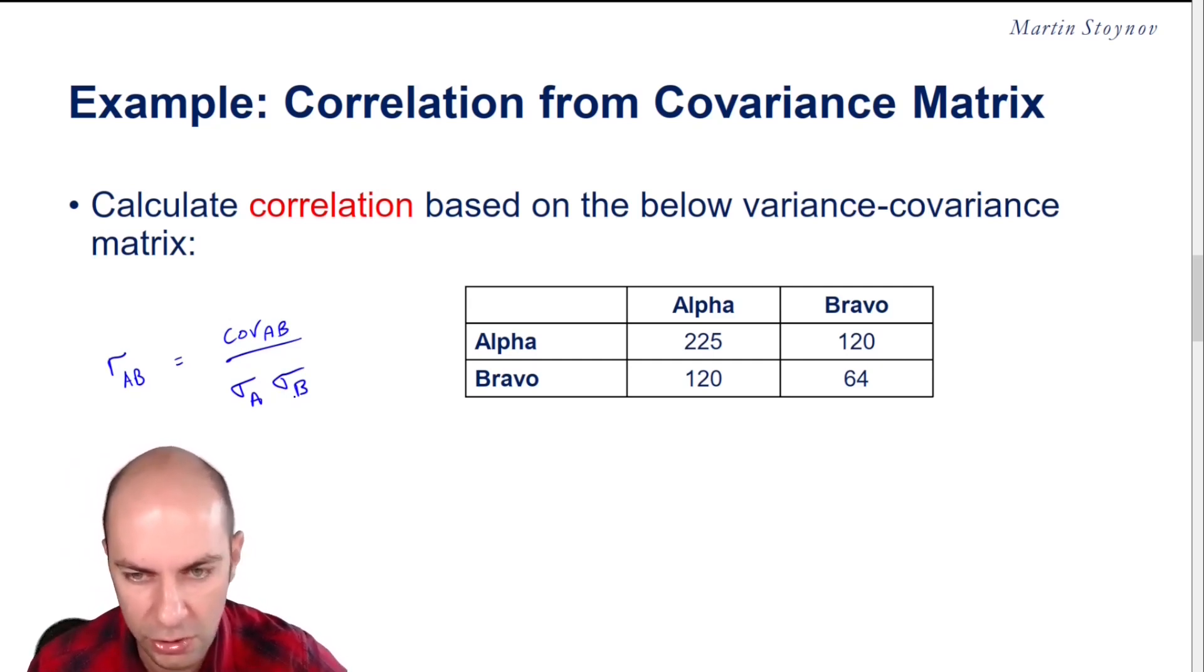The second thing you want to know is how a variance-covariance matrix works, or sometimes we simply call it a covariance matrix. So where alpha intersects alpha, i.e. this number here,